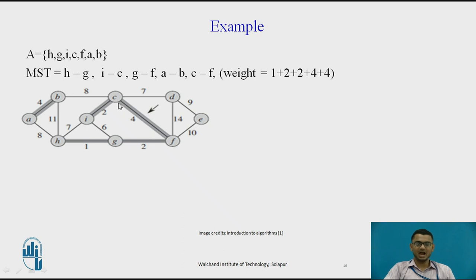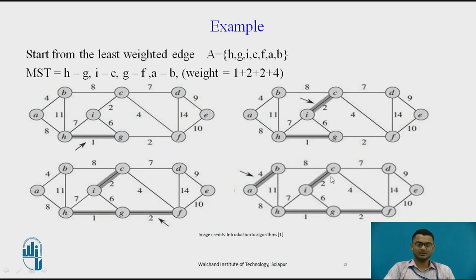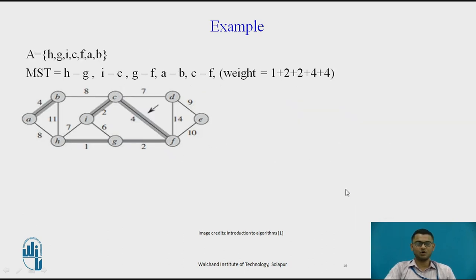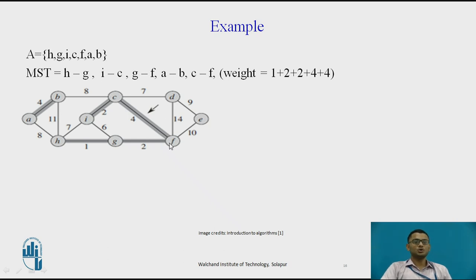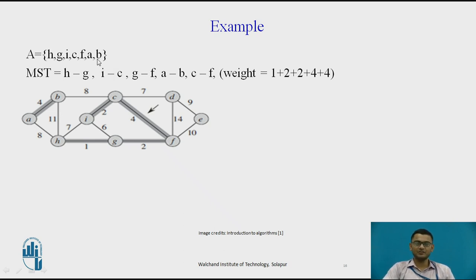The next edge after the previously visited edge is C to F having weight 4. We add that edge as well as those two nodes to set A. If those two nodes were already added, we need not add them again, but the weight is added to the MST.